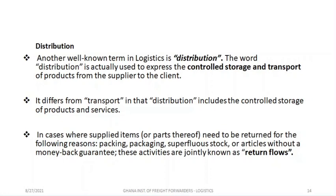In cases where supplied items or the packing thereof need to be returned, the reasons include: packaging material has been compromised — there's a dent or some damage — the packing is not done well, packaging material is destroyed, there is superfluous stock, or articles without a money-back guarantee. These activities are joined in a return flow. When these things happen, the item has to be returned to where it came from.